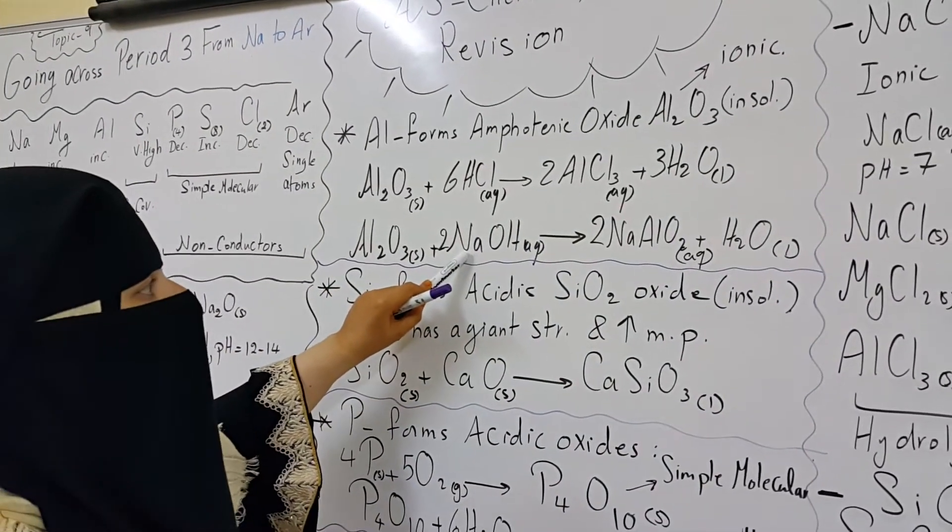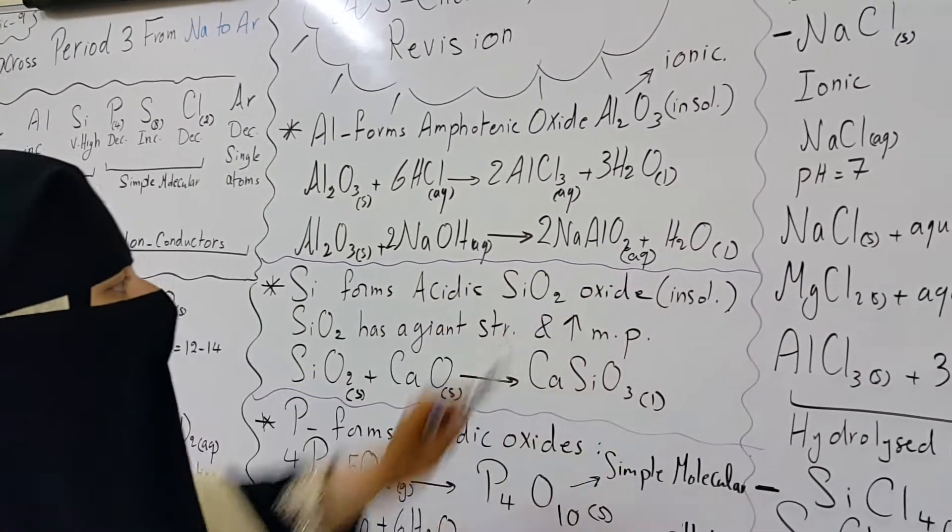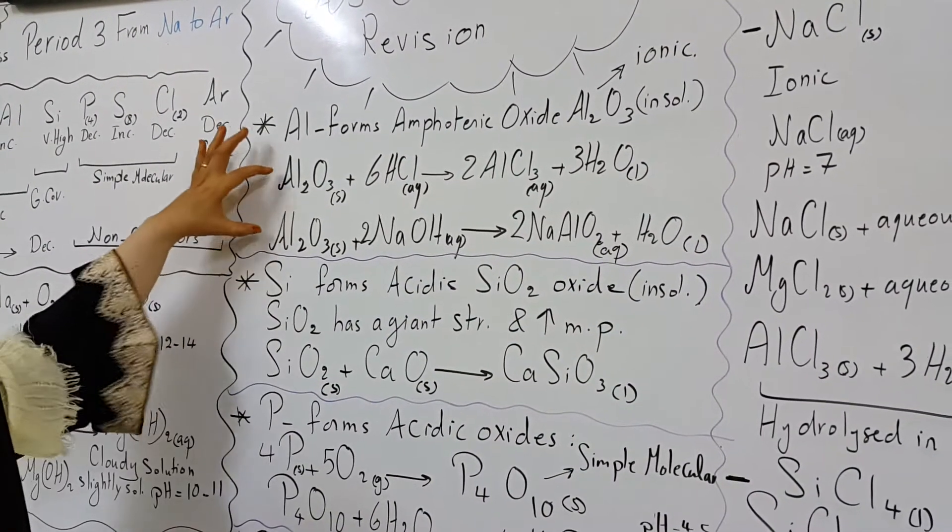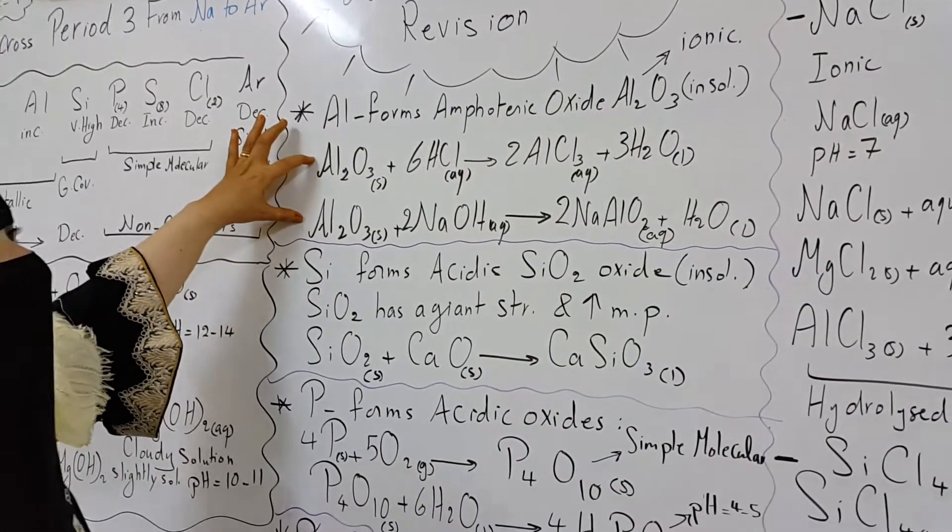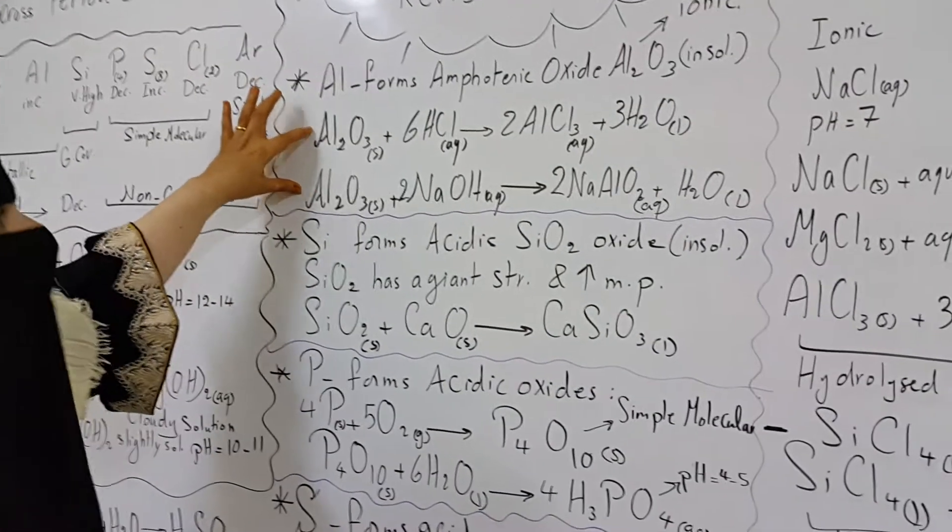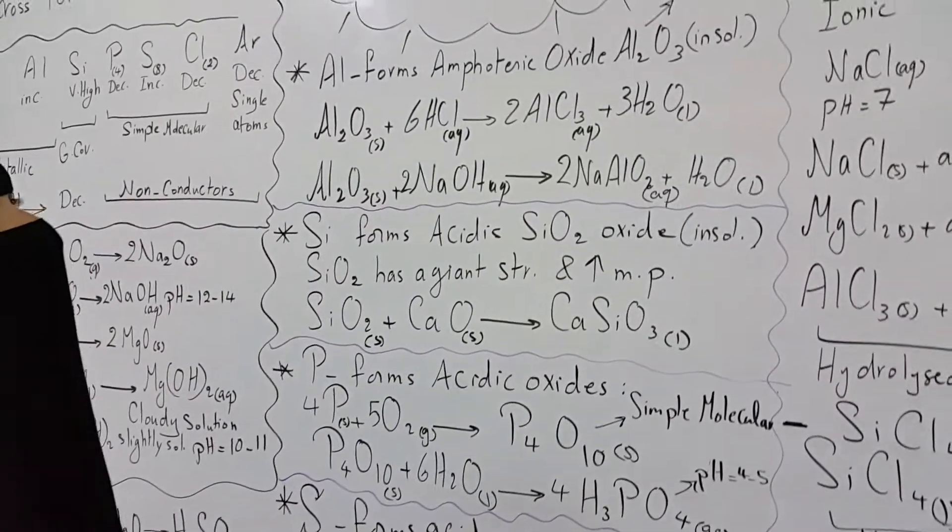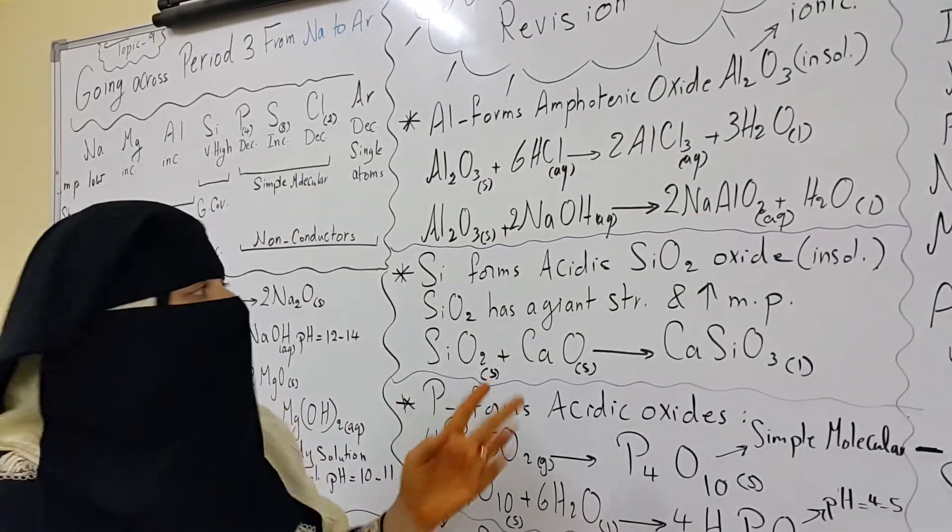And it can react with strong alkaline solution such as sodium hydroxide to form sodium aluminate and water. And this shows the amphoteric properties of alumina oxide. It has the ability to react with both acids and the alkyls. Amphoteric means it has both basic and acidic properties.